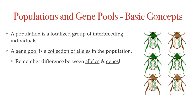A population, of course, is a group of interbreeding individuals. A population will have a gene pool. A gene pool is a collection of all the alleles that are found in the population. So let's recall the difference between the terms alleles and genes. In simplest terms, a gene is a section of the DNA code that codes for a particular trait. So let's say in this population of beetles that you see right here, the gene that we could focus on would be the gene that determines the beetle coloration.